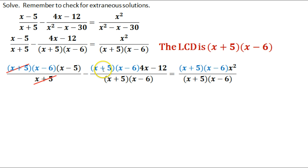Okay, over here we've got this x plus 5 on top and bottom we can cross off. We've got also we have an x minus 6 on top and bottom we can cross off. That leaves me with a 4x minus 12.